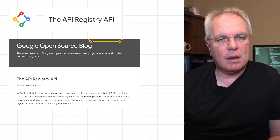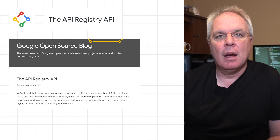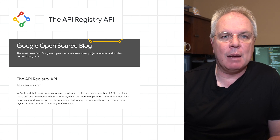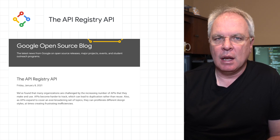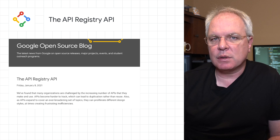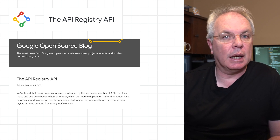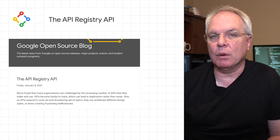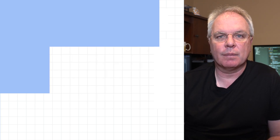We've set the registry API's stability level as alpha, but our aim is to make it a stable base for API lifecycle applications. Check out the post to try out our open source reference implementation that can be run locally or deployed in a container with Google Cloud Run or other container-based services.